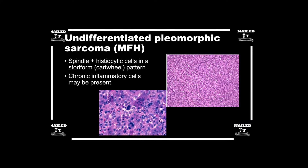Undifferentiated pleomorphic sarcoma used to be called malignant fibrous histiocytoma, but that name has been retired.